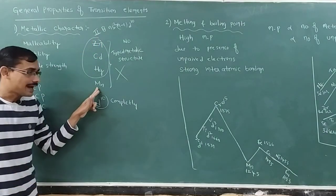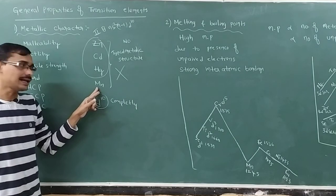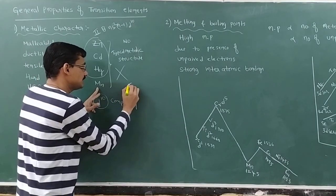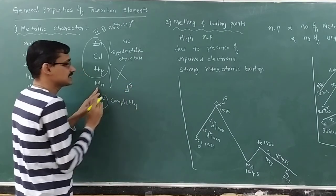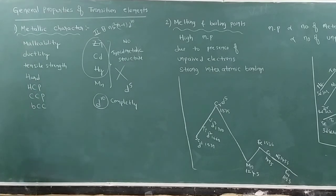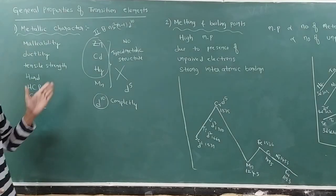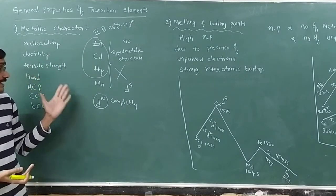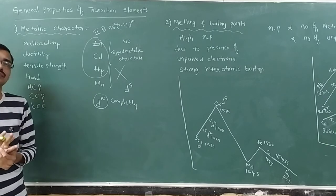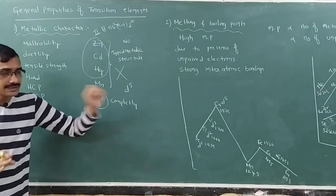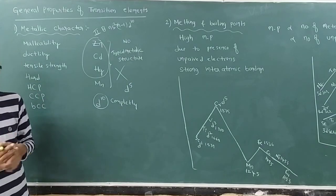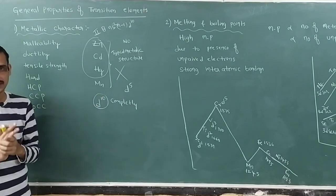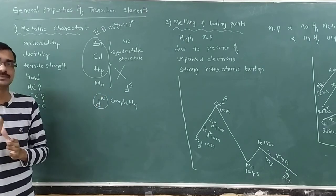What about manganese? Manganese has a D5 configuration, even though it does not exhibit some of these metallic properties. This is because of its typical crystal structure, which I will explain later.